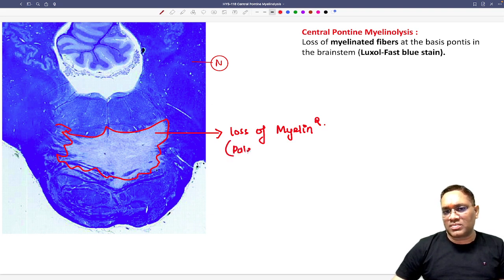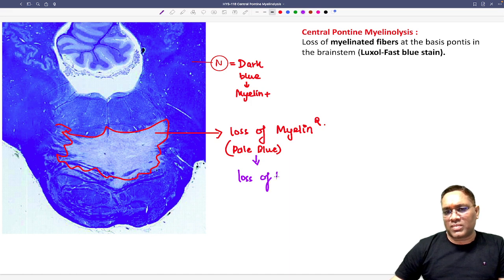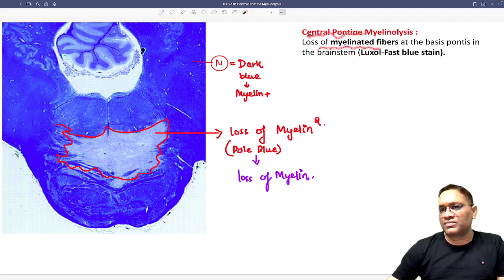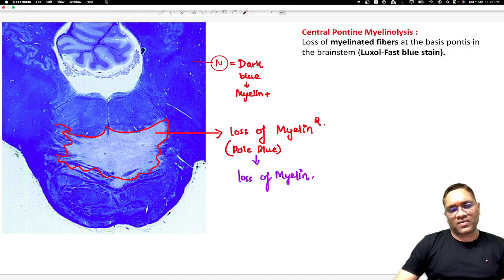So how you will identify? It will be pale blue in appearance. Normal area will be dark blue in appearance. Dark blue area means they are having myelin, so myelin is present. And in this pale area what you will understand is there is a loss of myelin. So this is the central pontine myelinolysis where we are seeing loss of myelinated fiber at the basis pontis in the brain stem. And this staining is called Luxol Fast Blue Stain.